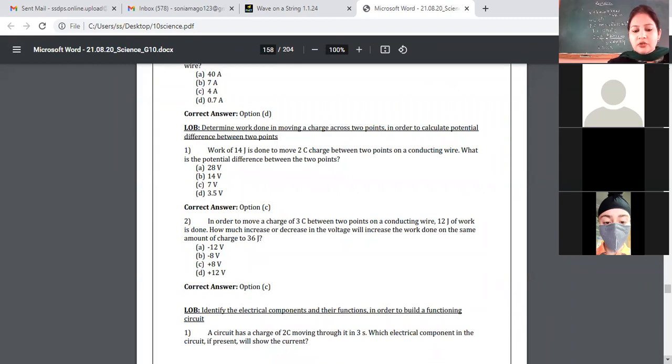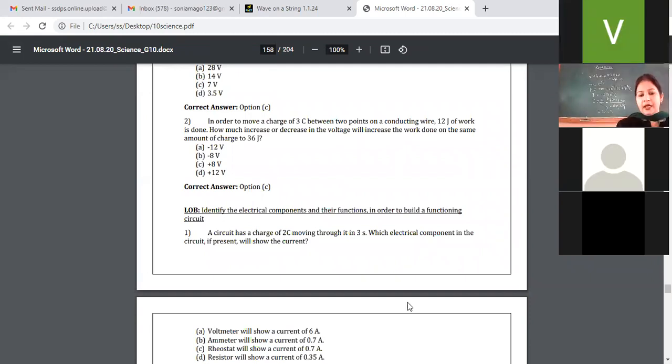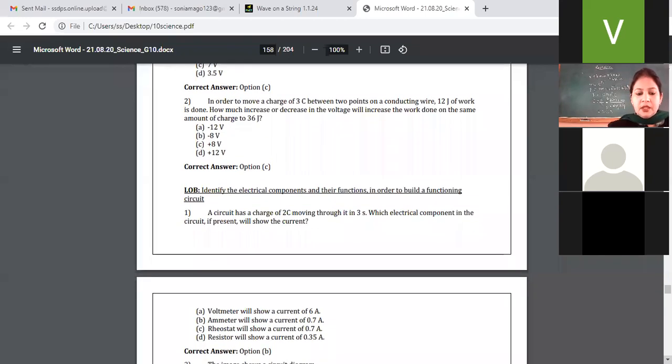A circuit has a charge of 2 coulomb moving through it in 3 seconds. Which electrical component in the circuit, if present, will show the current? Yes, Vivan? Ammeter. But check the value of current also. How much is the current? I is equal to Q by T. So 2 by 3. 2 by 3 is 0.7. Yes, it is 0.7 ampere. So ammeter will show current of 0.7 ampere. Option is B, correct.